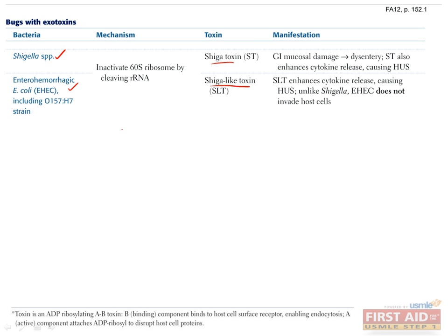Both Shigella and E. coli O157:H7 can cause HUS, or hemolytic uremic syndrome, by stimulating cytokine release. HUS is a very serious complication, particularly associated with enterohemorrhagic E. coli infections, that presents with the triad of renal failure, hemolytic anemia, and thrombocytopenia.